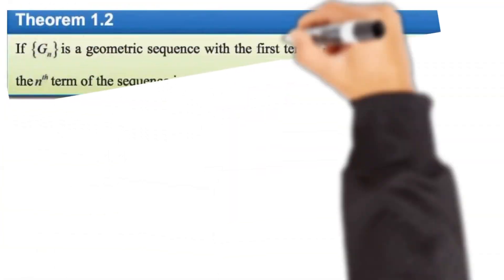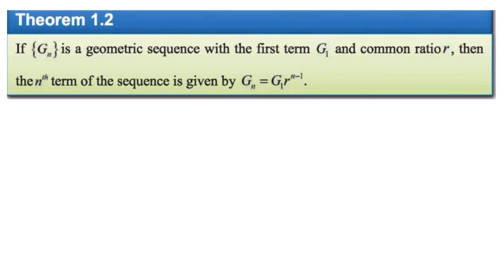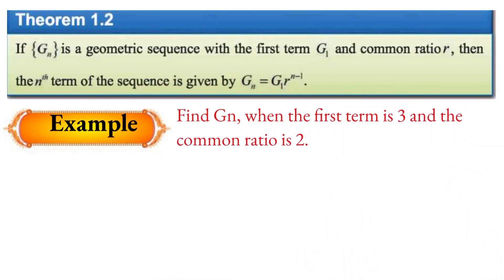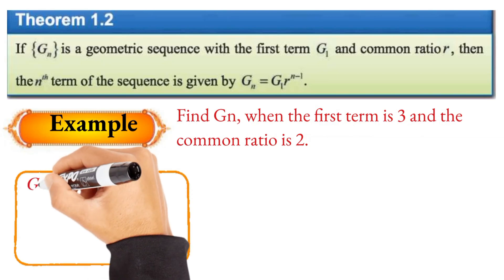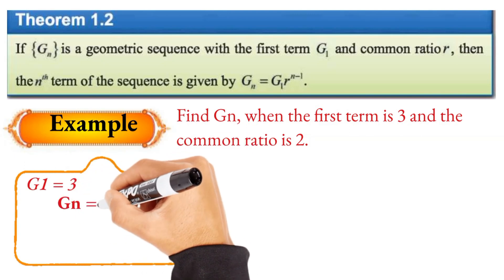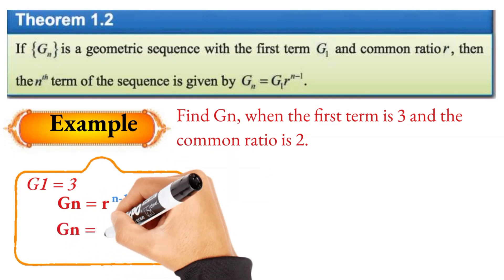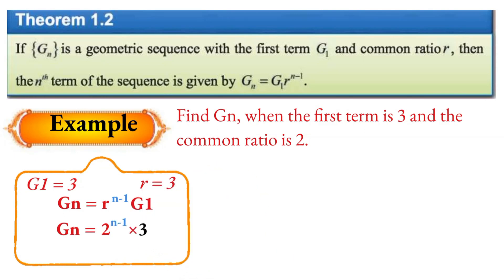Theorem: if gn is a geometric sequence with first term g1 and common ratio r, then the nth term of the sequence is given by gn equals g1 times r to the power of n minus 1. For example, if the first term is 3 and the common ratio is 2, the general term is gn equals 3 times 2 to the power of n minus 1.